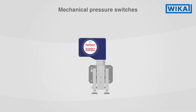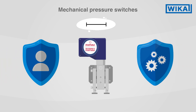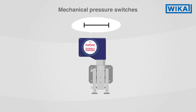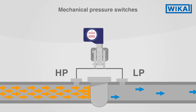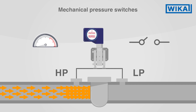Mechanical pressure switches are used to keep the pressure within a predefined span. In this way, people and plants are reliably protected. In the example of filter monitoring shown earlier, differential pressure switches can react accordingly or transmit signals as soon as a certain value is exceeded or fallen below.